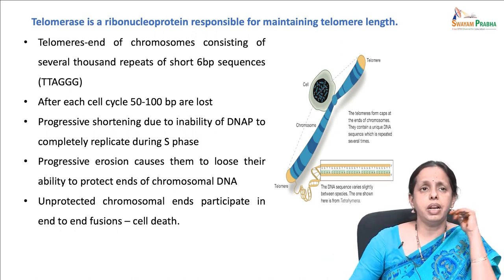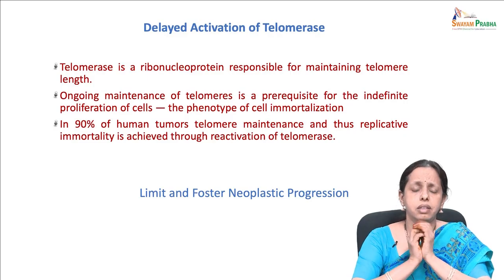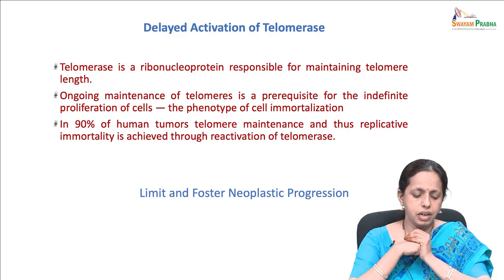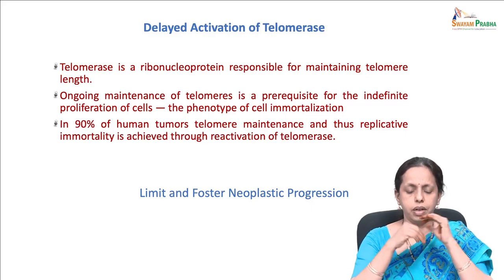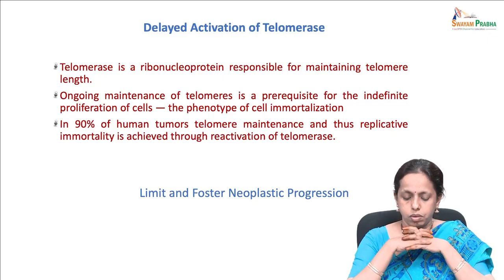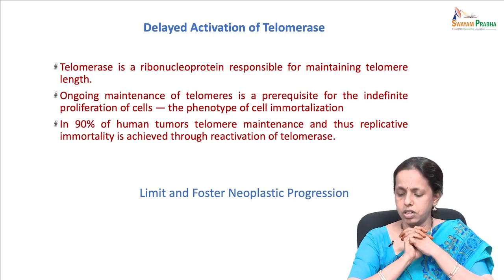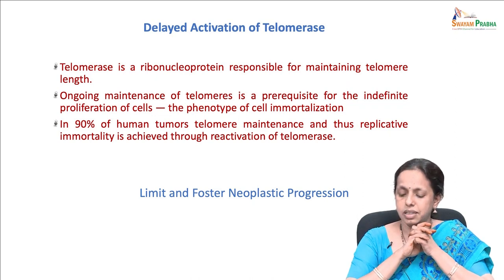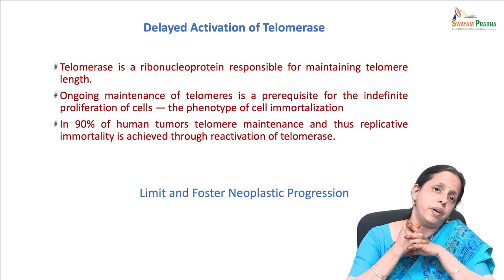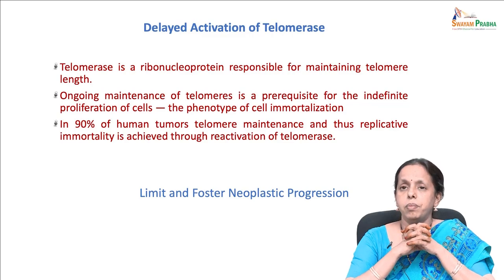The Nobel Prize in Physiology or Medicine in 2009 was awarded to Blackburn, Greider, and Szostak for their discovery of telomerase, which plays a key role in the formation or progression of up to 90% of malignancies. Telomerase is almost absent in non-immortalized human cell lines but is expressed at significant levels in the great majority of immortalized cell lines, including all cancer cells. By extending telomeric DNA, telomerase is able to counter progressive telomere erosion.